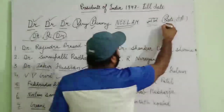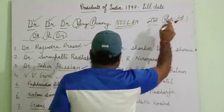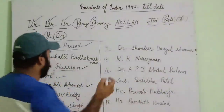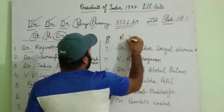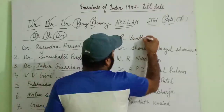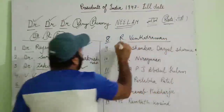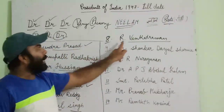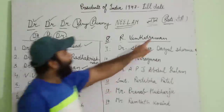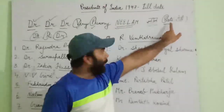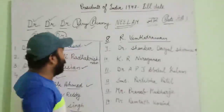Next in the mnemonic is 'R' from 'Roti Rahi', which stands for R. Venkataraman — the eighth president of India. So the eighth president was R. Venkataraman.